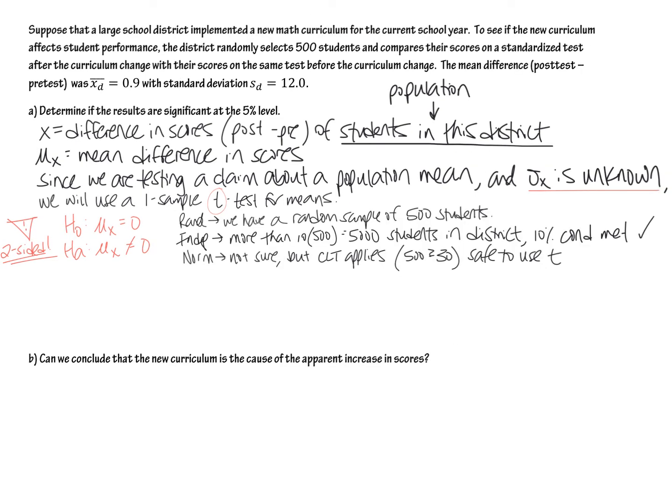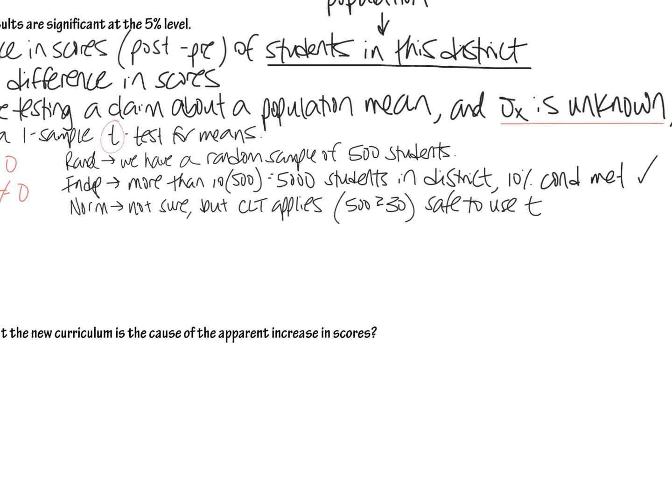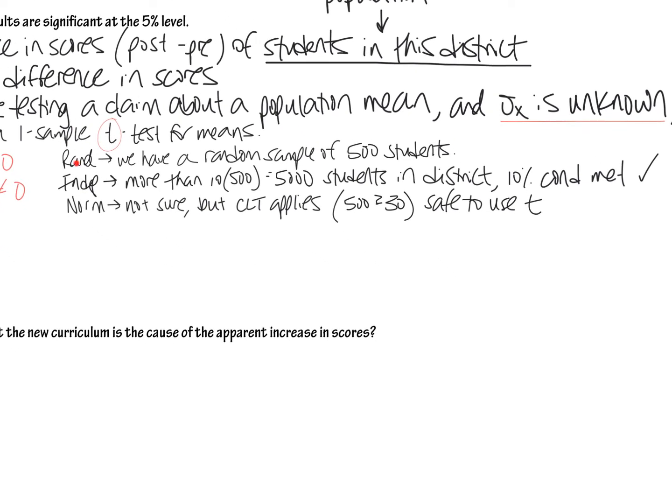So here's my conditions. Let me zoom in a little bit so it's easier to see. I did random, independent, normal, just as we discussed. Here's what I would write for the normal condition. We're not sure if the distribution itself is normal or not, but the CLT applies here. And then it would probably be a good idea to say like what it is you know about the CLT applying to this problem.